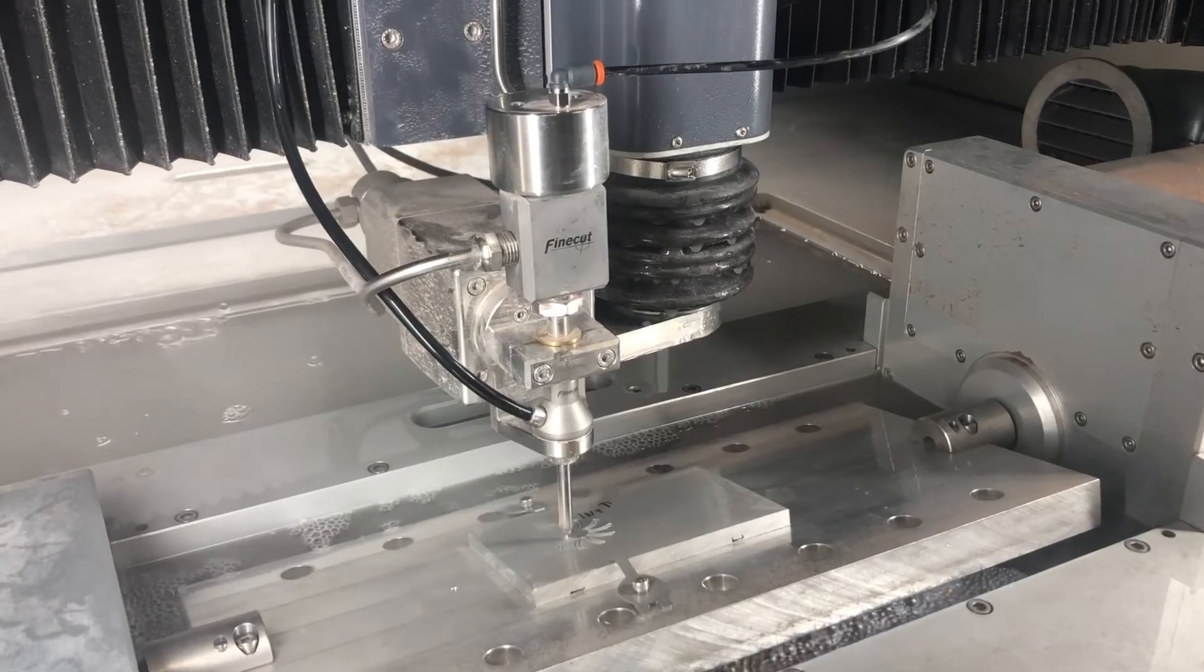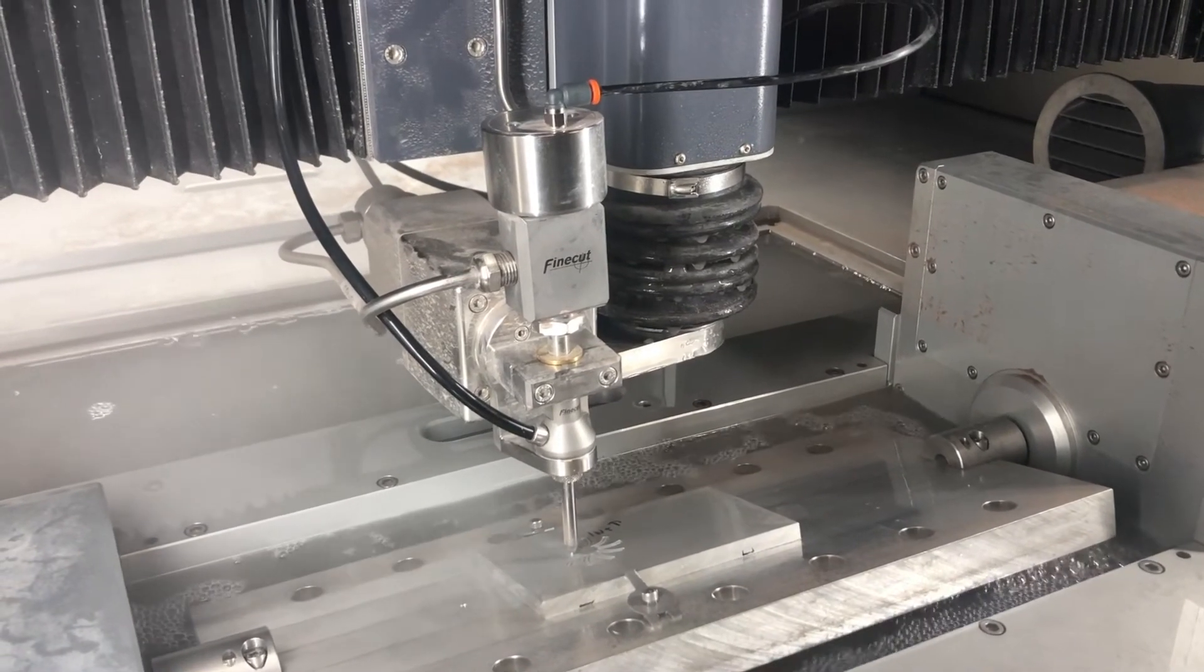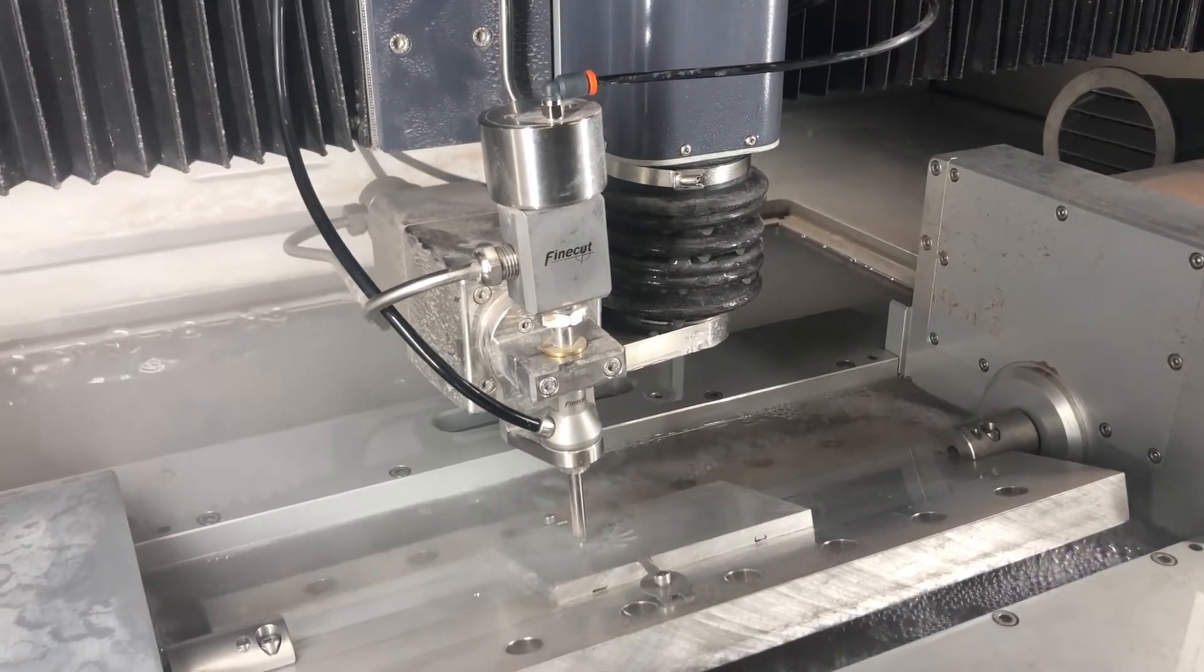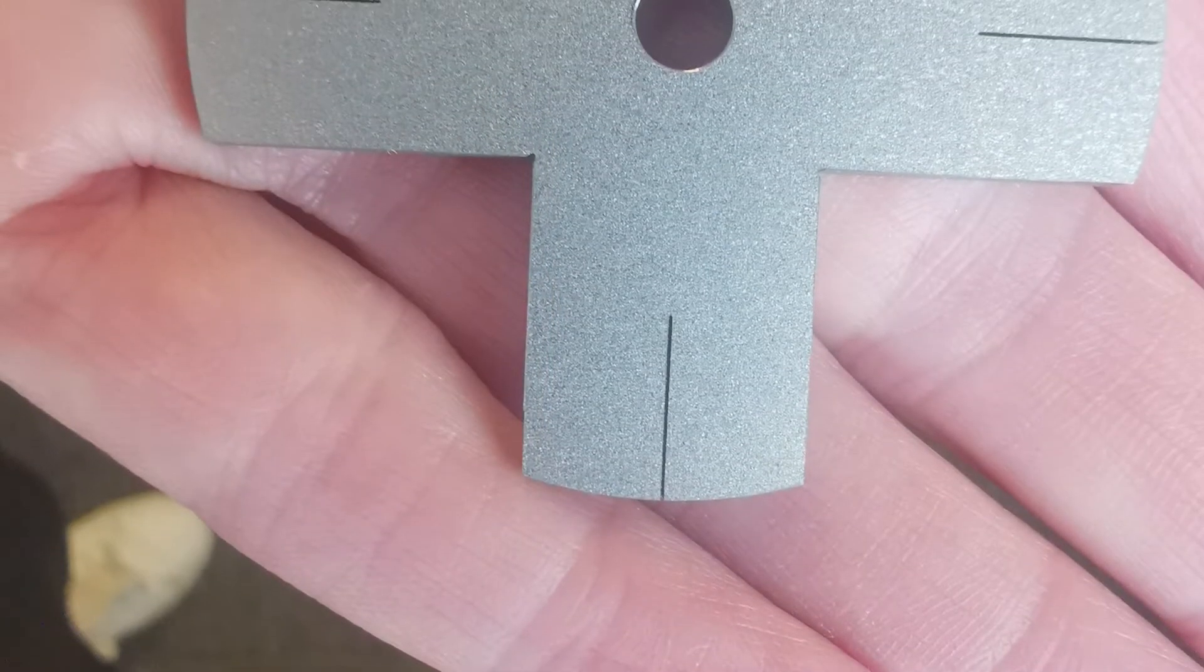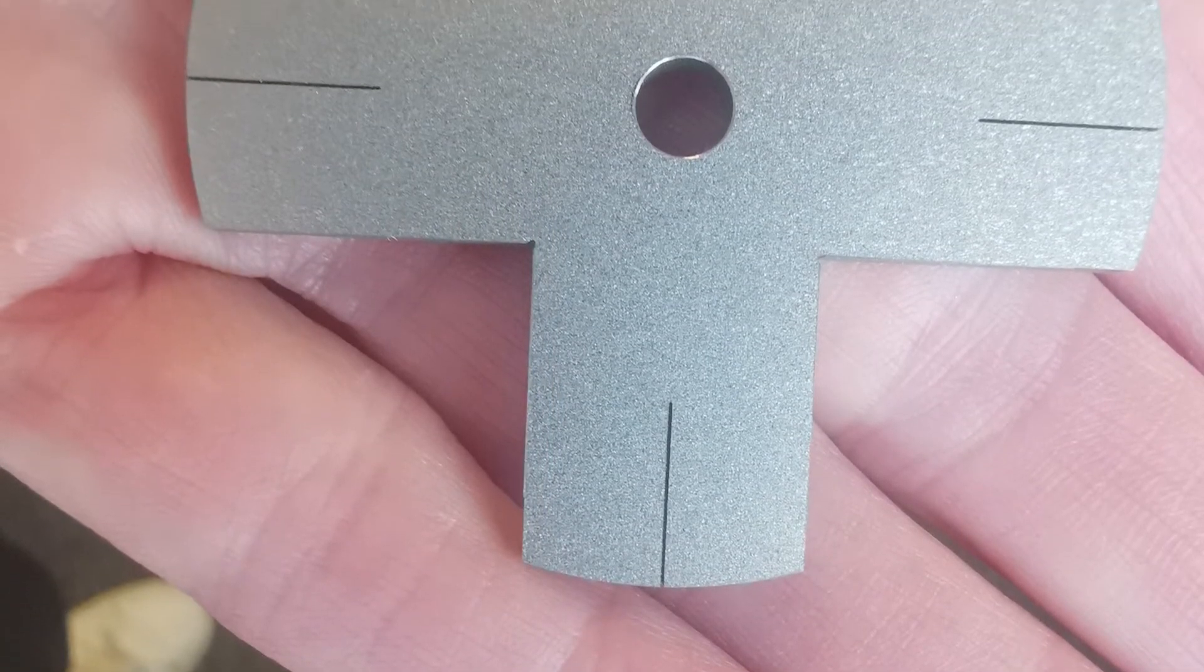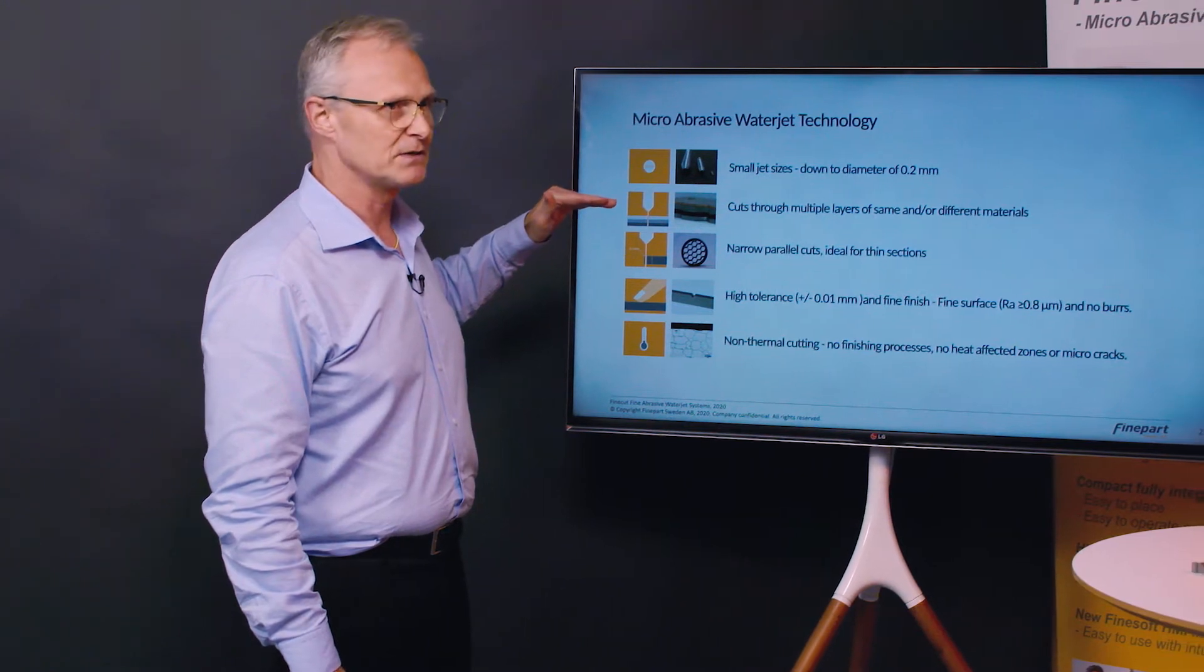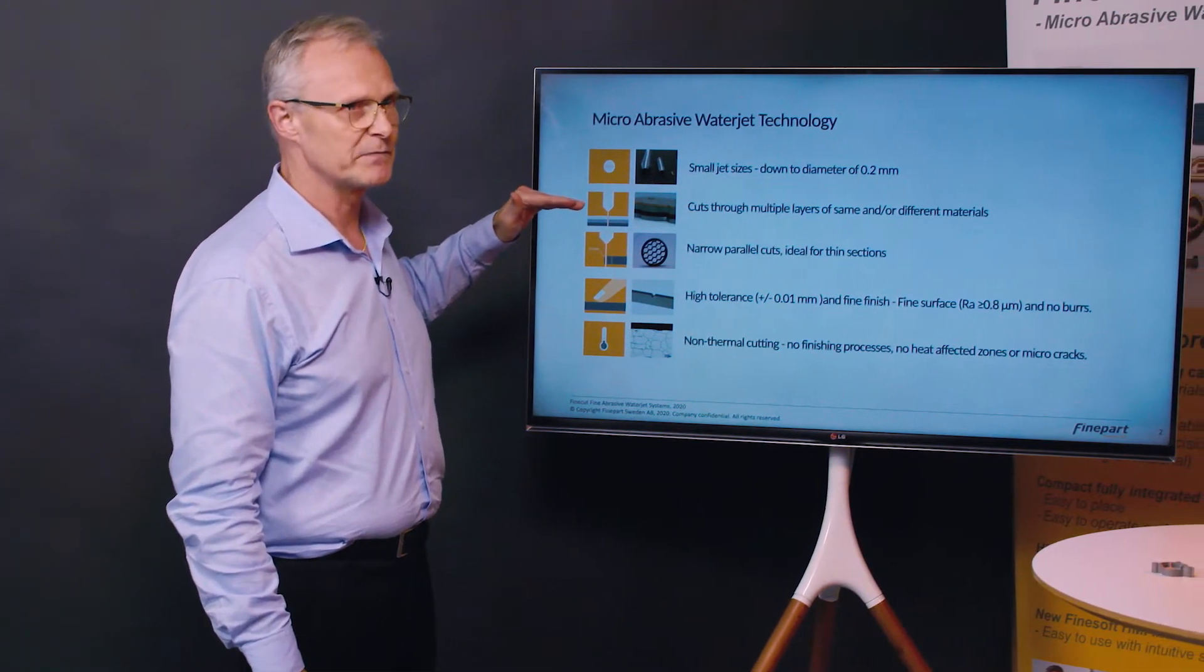So what is specific for micro abrasive waterjet technology? Well the micro abrasive waterjet technology gives us the capability of cutting very small parts. We have jet sizes going down to 0.2 millimeters so we can cut features down to 0.1 millimeter in radius. We can cut through different materials, we can even cut multiple layers of materials of different types that are stacked on top of each other.